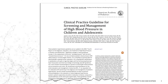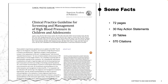Luckily, the American Academy of Pediatrics recently released a guideline for how to treat children with high blood pressure. This guideline is 72 pages long with 30 key action statements, 20 tables, and over 270 citations. Now, that's a lot to read.